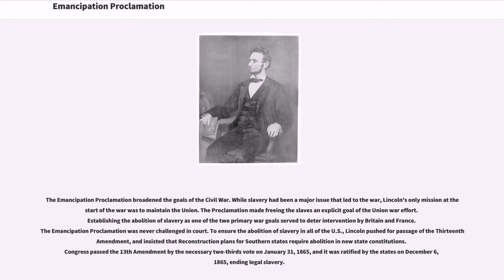The Emancipation Proclamation broadened the goals of the Civil War. While slavery had been a major issue that led to the war, Lincoln's only mission at the start of the war was to maintain the Union. The proclamation made freeing the slaves an explicit goal of the Union war effort. Establishing the abolition of slavery as one of the two primary war goals served to deter intervention by Britain and France. The Emancipation Proclamation was never challenged in court. To ensure the abolition of slavery in all of the U.S., Lincoln pushed for passage of the 13th Amendment.